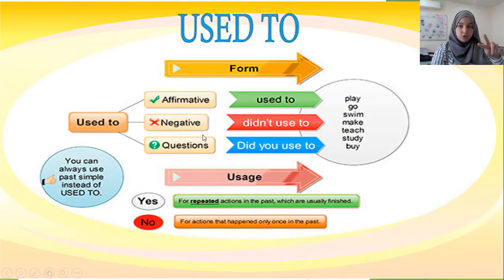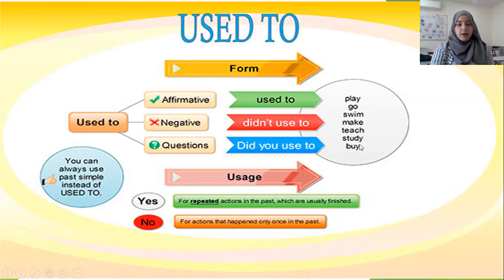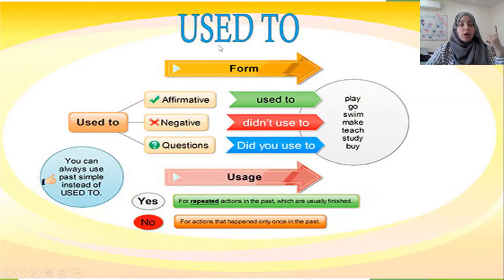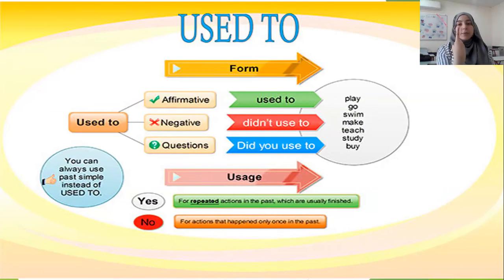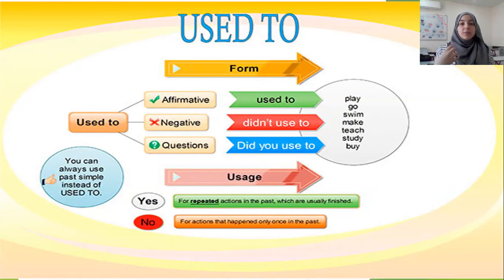For a question, just flip the sentence: Did you use to play? Did you use to go? An important reminder: you can only use used to for a repeated action in the past, not for an action that happened once. For example, I would say I had a meeting last week — that happened once. But if something happened repeatedly in the past, then you use used to.